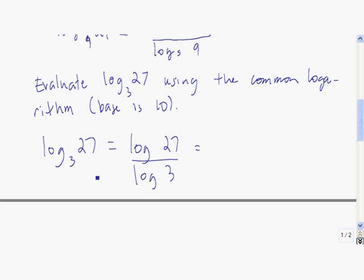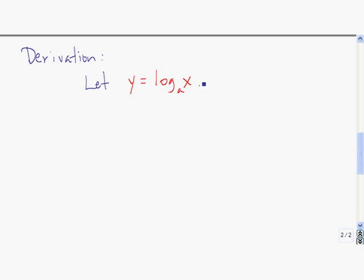So what you have is log base 3 of 27 is equal to the log of 27 divided by the log of 3. If you plug that into your calculator, you get the answer that you were expecting, and that's 3. 3 cubed is 27.